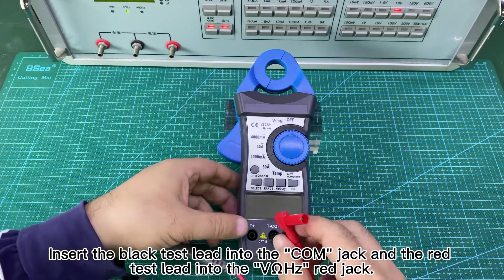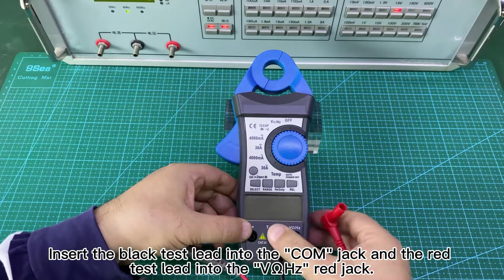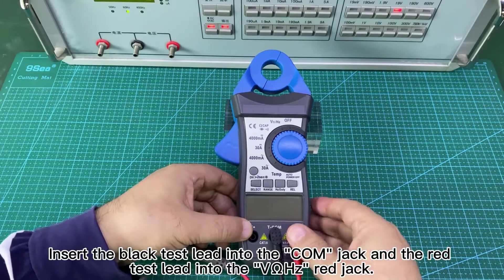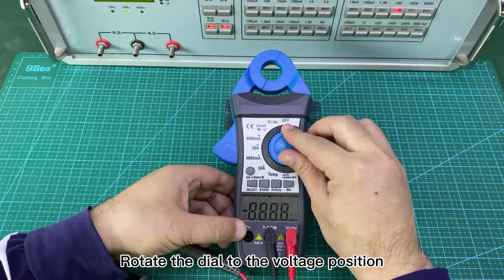AC and DC voltage test. Insert the black test lead into the com jack and the red test lead into the V-Omega-HZ red jack. Rotate the dial to the voltage position.